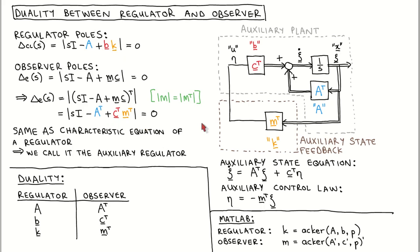The observer characteristic equation is now in exactly the same form as the regulator characteristic equation. To help us reason about the observer, we construct the auxiliary regulator, consisting of the auxiliary plant and the auxiliary state feedback. Where we have A in the normal regulator, we now have A transposed; where we normally have B, we now have C transposed; and where we normally have K, we have M transposed. The states of the auxiliary regulator are called zeta, and the input to the auxiliary plant is called eta. We can verify that the characteristic equation corresponding to the auxiliary regulator matches this characteristic equation.